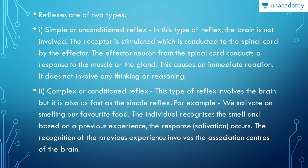The second type is the complex or conditioned reflex. This type involves the brain but is also as fast as the simple reflex. For example, we salivate on smelling our favorite food. The individual recognizes the smell and, based on a previous memory or experience, salivation occurs. The recognition of that previous experience involves the association centers of the brain — that is the conditioned reflex.